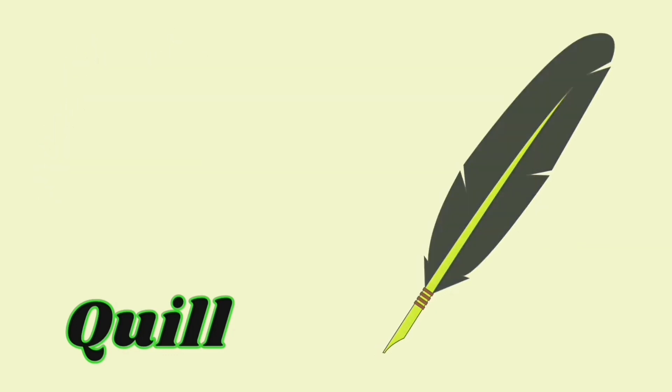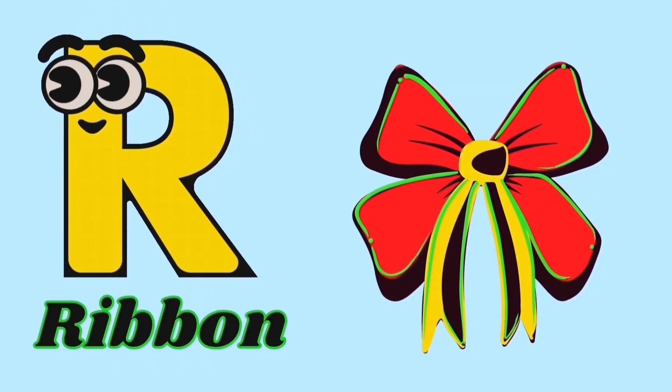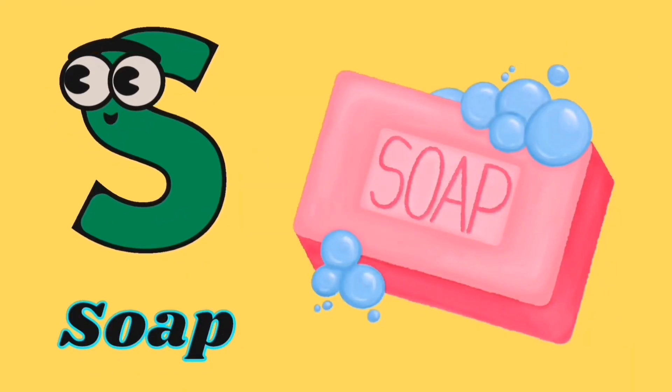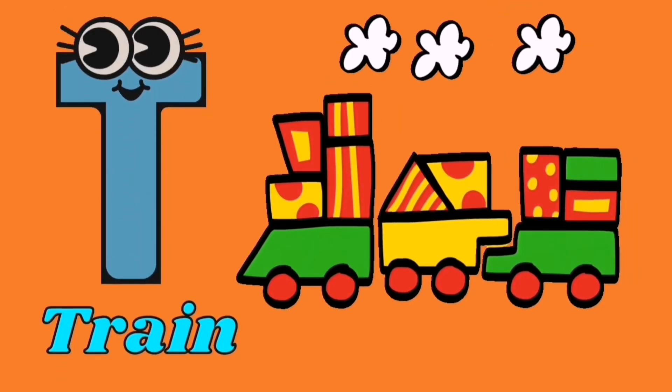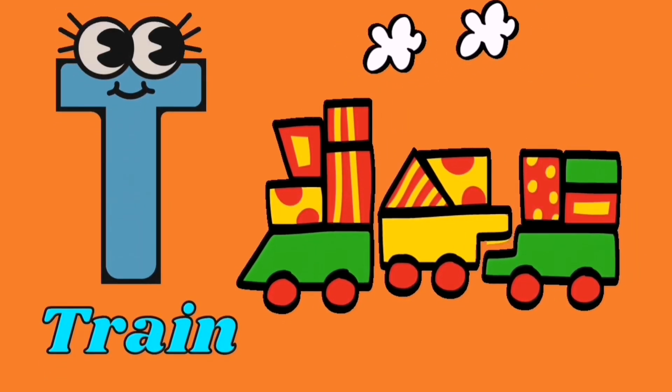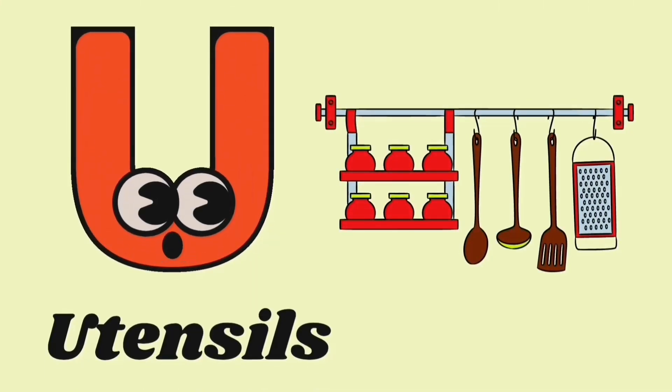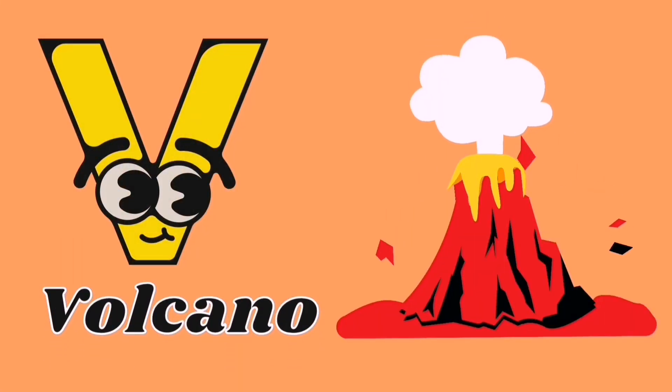R for ribbon, S for soap, T for train, U for utensils, V for volcano.